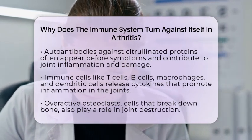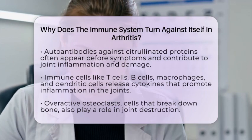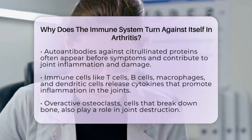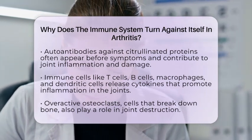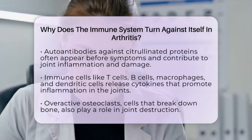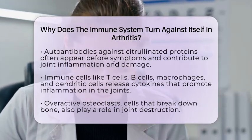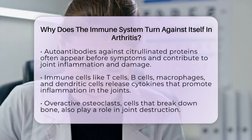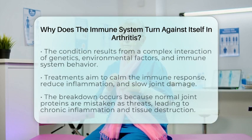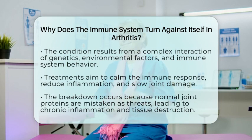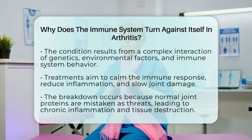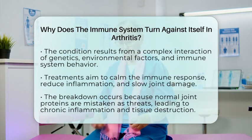Overactive osteoclasts, cells that break down bone, also contribute to joint damage. All these factors interact in complex ways. It's not just one thing but a combination of genetics, environment, and immune system quirks that cause the immune system to turn against the joints.